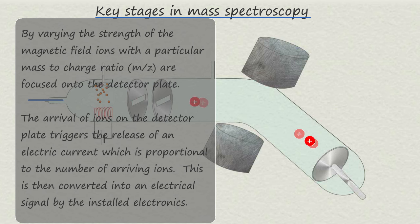And when these ions strike the detector plate, it triggers the release of an electrical current, which is proportional to the number of arriving ions. This is then converted into an electrical signal by the installed electronics.